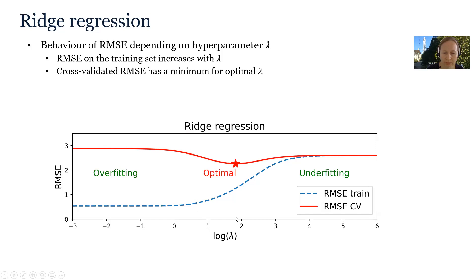As we come closer to the optimal value of lambda, the root mean square error on the training set will start increasing, while the root mean square error calculated by cross-validation is decreasing until it reaches a minimum. This minimum corresponds to the value of lambda we choose. As lambda increases further, the root mean square error on both the training set and cross-validation also increases until it reaches a stable value, and for large values of lambda we are underfitting our model.